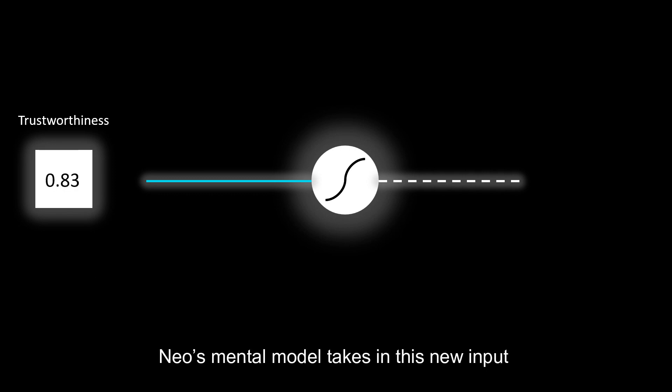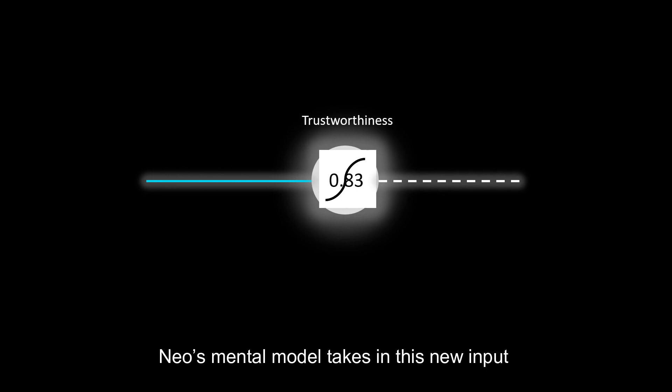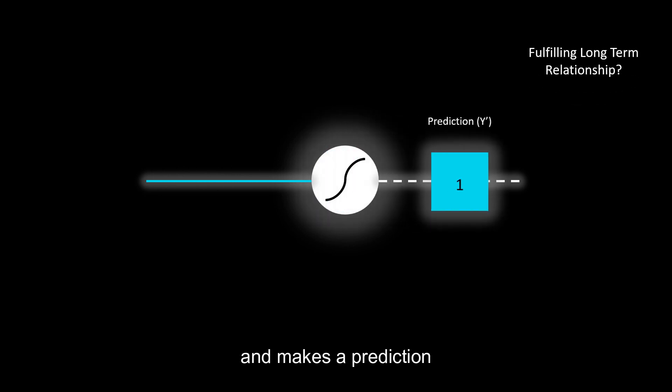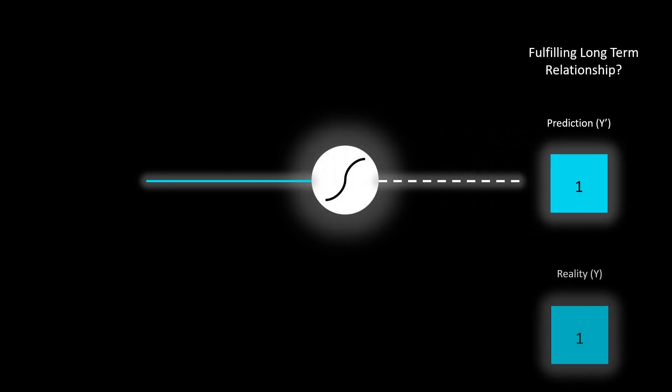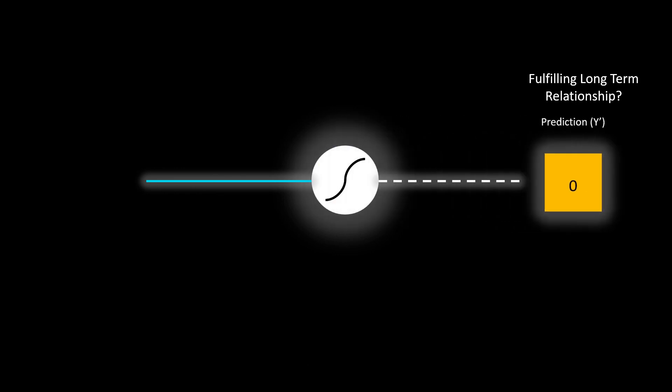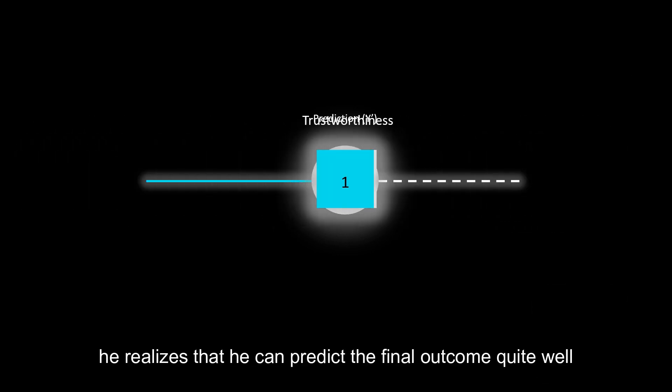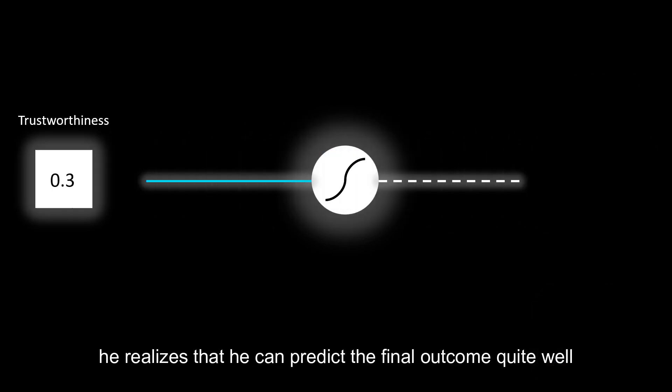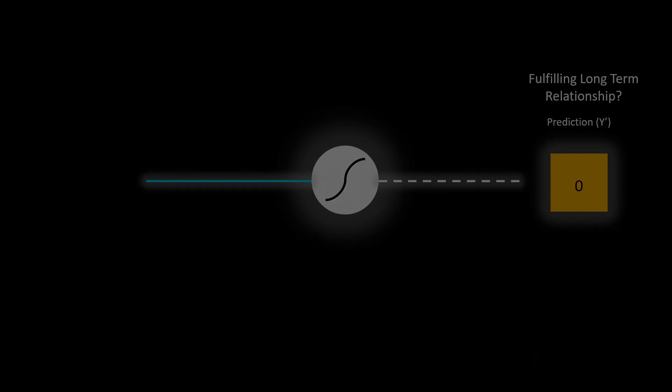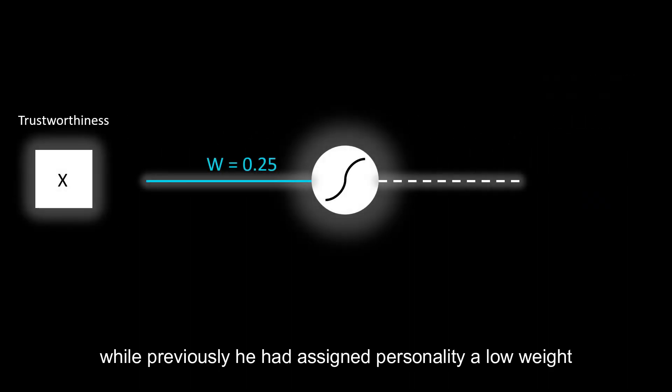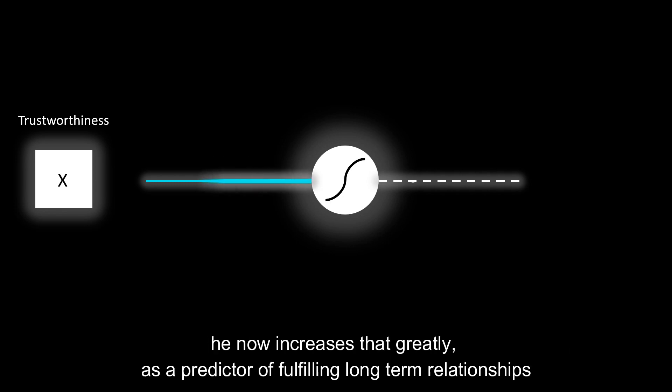Neil's mental model takes in this new input and makes a prediction. To his relief, the reality aligns with his updated mental model. Neil then reflects on his past relationships, and using this new metric, he realizes that he can predict the final outcome quite well. And so while previously he had assigned personality a low weight, he now increases that greatly as a predictor of fulfilling long-term relationships.